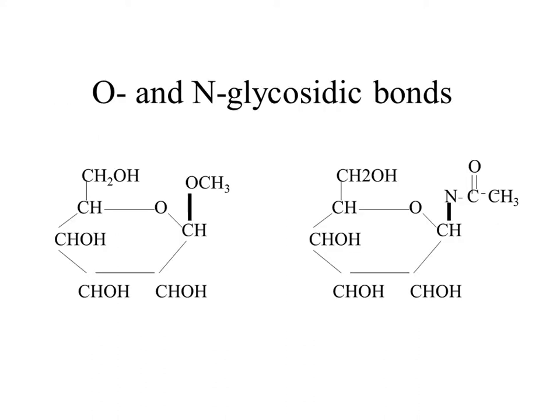For example, when an alcohol group — in this case methanol — interacts with the hydroxyl group from the sugar, it forms an O-glycosidic bond, which is a chemical bond between the carbon atom and the oxygen atom. On the other hand, when an amine group interacts with the O-H group, it forms an N-glycosidic bond, which is a chemical bond between the carbon atom and the nitrogen atom.